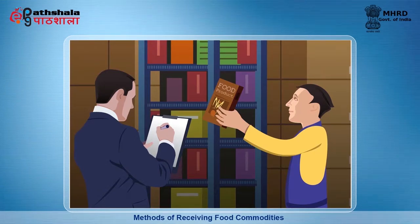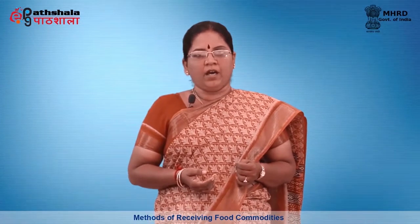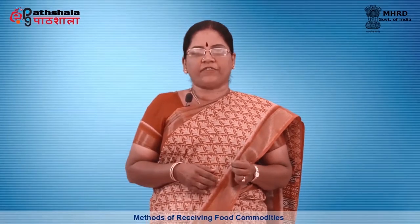The receiving area is generally located close to the storage area so that food can be sent directly to the stores after checking. In smaller establishments, there is usually a small receiving area where a weighing scale and a work table are placed to check the quality of foods as they arrive. In larger establishments, the receiving area may be a bigger area located close to the roads to receive trucks carrying the ordered items.